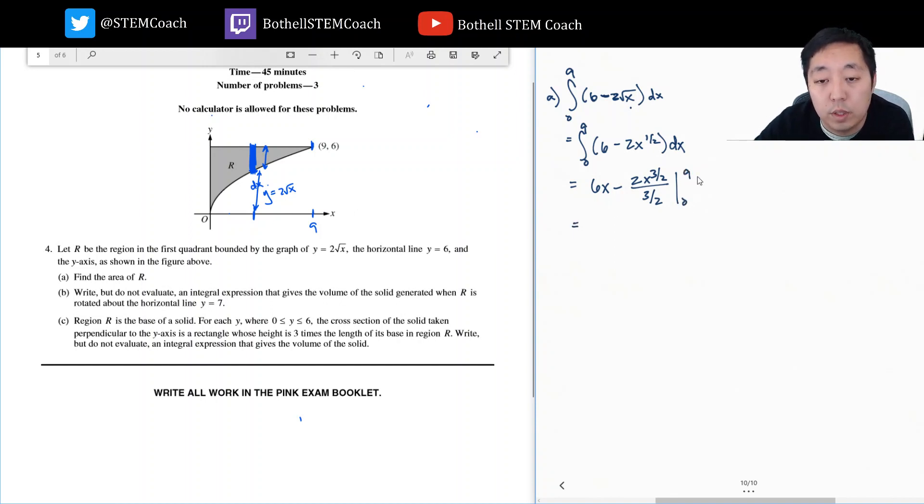So we're going to do 6 times 9 minus 2. When I plug in 0 to 6x, it's just 0. So it's 6 times 9 minus 2 times 9 to the 3 halves over 3 halves. This is 0 because 0 to the 3 halves is just 0.